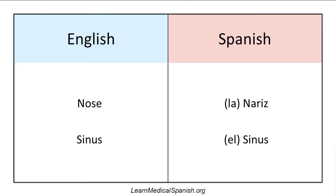Two quick comments about sinus. First, you'll notice it's spelled exactly the same in English and Spanish, but you just have to use the correct pronunciation. In a previous episode, I taught you how to pronounce any word just by looking at it in Spanish — you just need to know those vowel and consonant sounds. Second, a lot of times just by knowing the anatomy, you can learn how to say the pathology as well. So the word for sinusitis is sinusitis — you're just adding that suffix to the word.